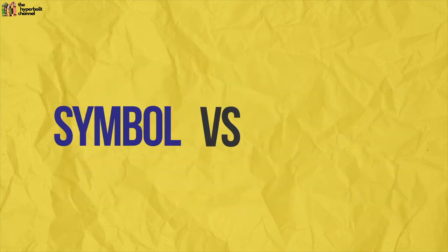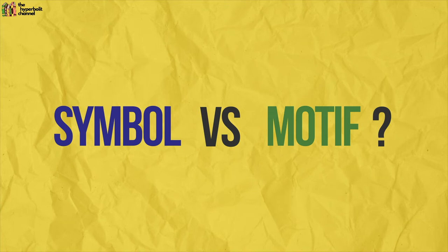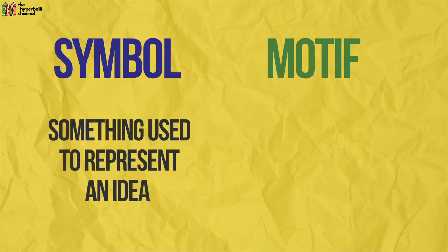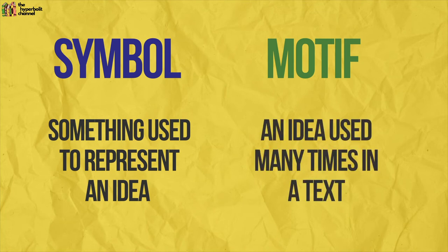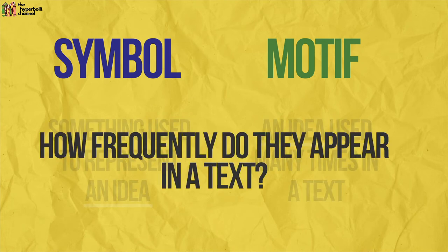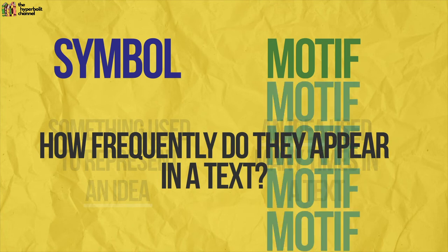But how is a symbol different from a motif? While a symbol is something used to represent an idea, a motif is an idea used many times in a text. We see that both a symbol and a motif refer to something representing an idea, but their key difference lies in the frequency with which they appear in a text. A symbol could appear just once or twice in a novel or a poem, but a motif must recur — i.e. appear time and again throughout a text.